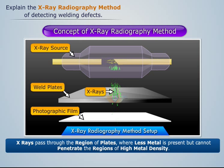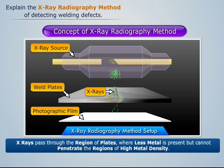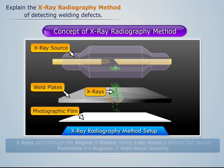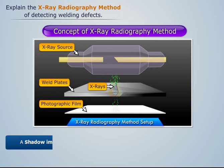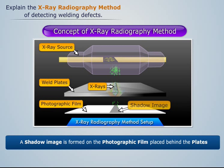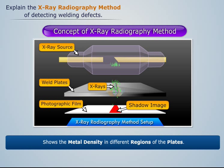X-rays pass through the region of plates where less metal is present, but cannot penetrate the regions of high metal density. So a shadow image is formed on the photographic film placed behind the plates, which shows the metal density in different regions of the plates.